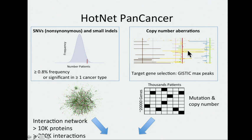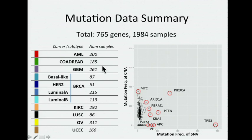Copy number aberrations are much trickier because they tend to be large. They include many genes, and really identifying the target gene is a really difficult challenge. We ended up using logistic max peaks that were predicted for the individual cancer types and then merged those together in a pan-cancer analysis. The interaction network we were able to use is a very noisy one. So with some modest filtering on the mutations, in total we had 1,984 samples across nine different cancer types — colorectal combined as one, and breast cancer split into four expression subtypes. And 765 genes after we remove these low frequency mutated genes.